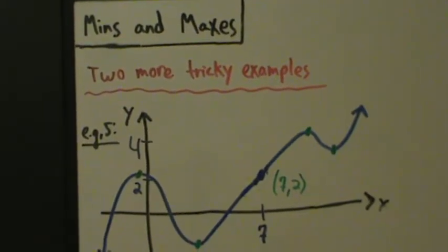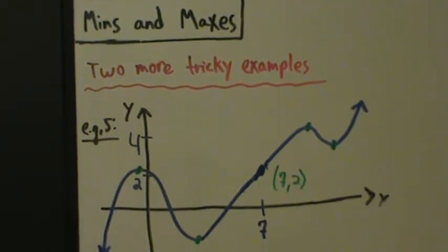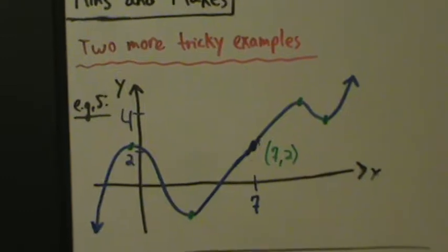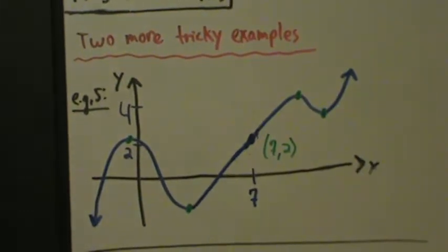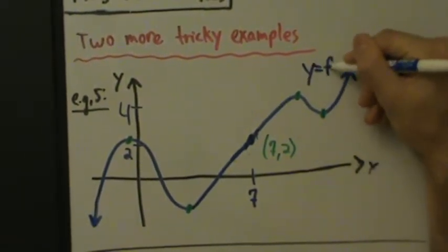Here are two more tricky examples with mins and maxes, and then in the next video we'll finally start talking about critical points. For now, example five — we have this function here, which we'll just call y equals f of x.